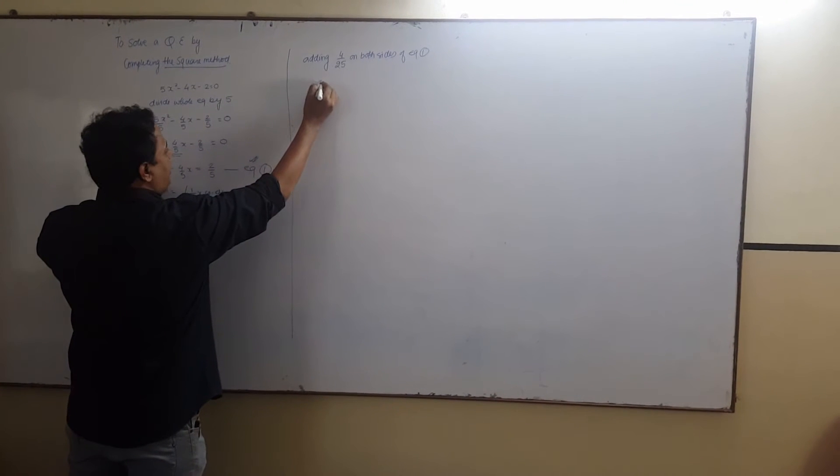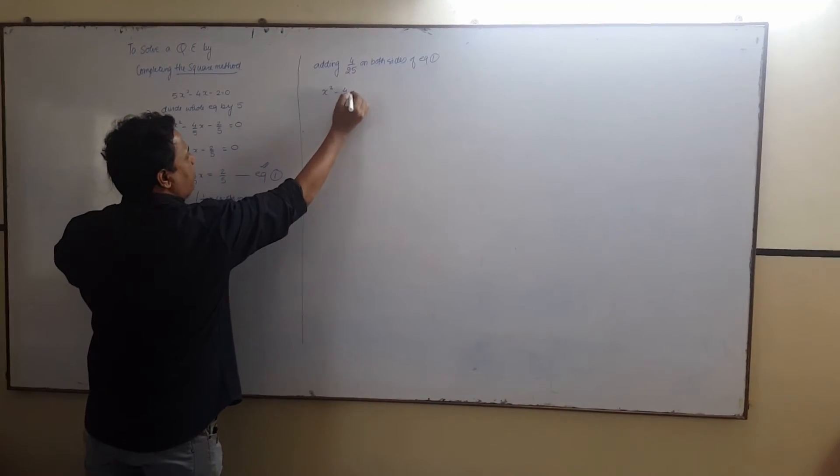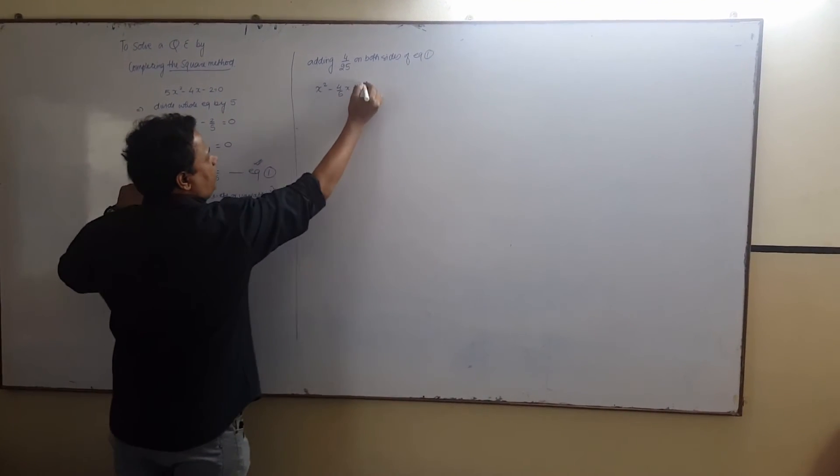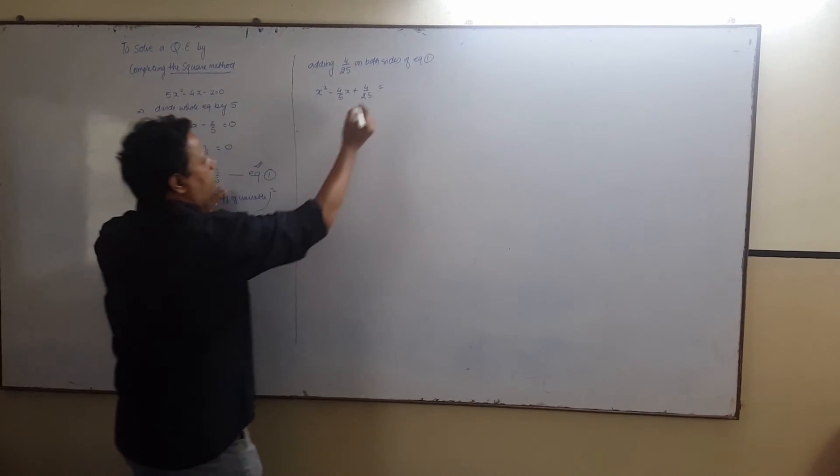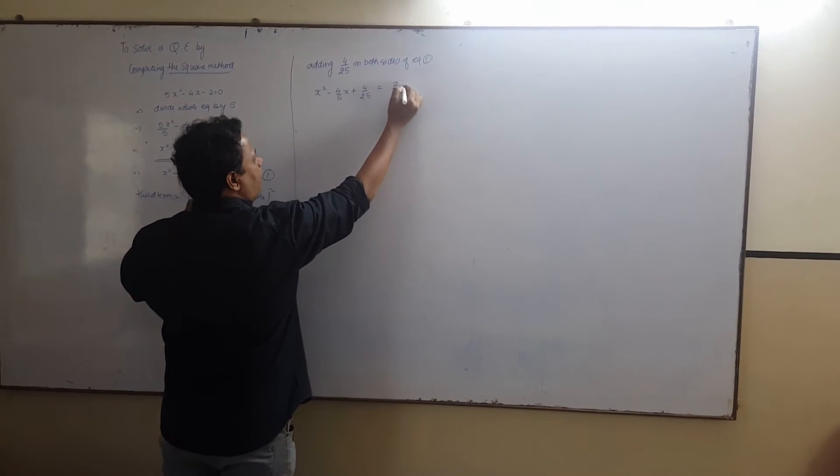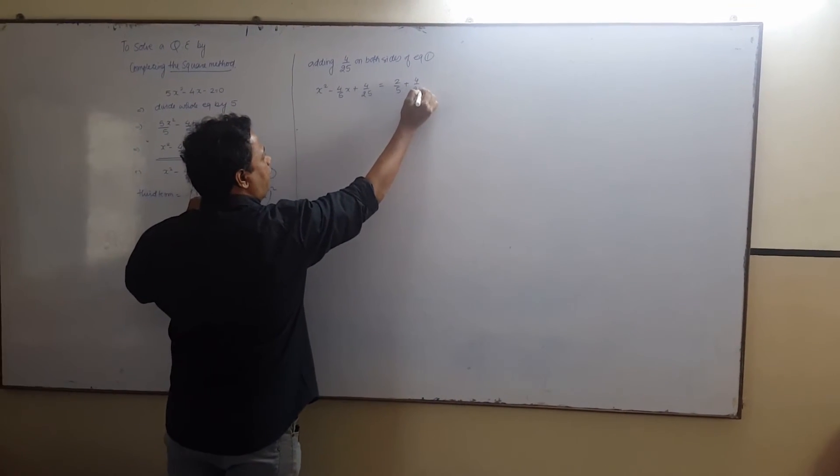So, what we will get, x square minus 4 upon 5x plus 4 upon 25 equals to 2 upon 5 plus 4 upon 25.